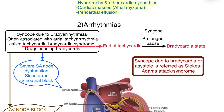Now let's come to one of the main reasons of cardiac syncope, which is arrhythmias. In both bradyarrhythmias and tachyarrhythmias, there are high chances of cardiac syncope. Syncope due to bradyarrhythmias is often associated with atrial tachyarrhythmias, which is called tachycardia-bradycardia syndrome. In this syndrome, the end of tachycardia is followed by a bradycardiac state with prolonged pause between them, which leads to syncope. Also, drugs causing bradycardia can lead to cardiac syncope.